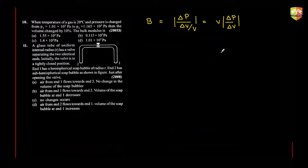So is it option A? Option A is correct here. Volume change by 10% means that delta V by V is actually 0.1.